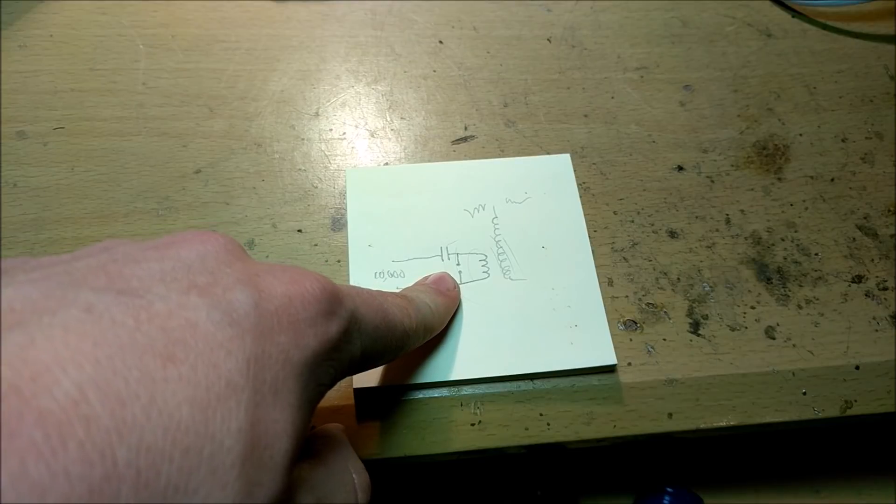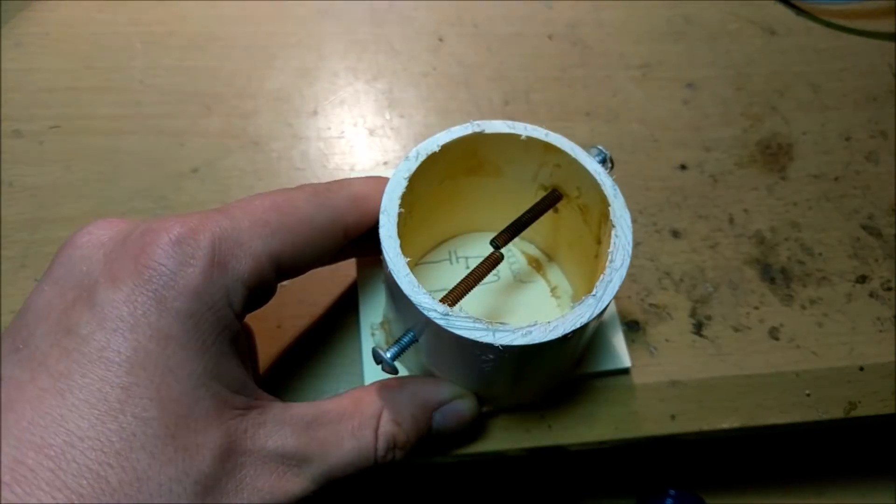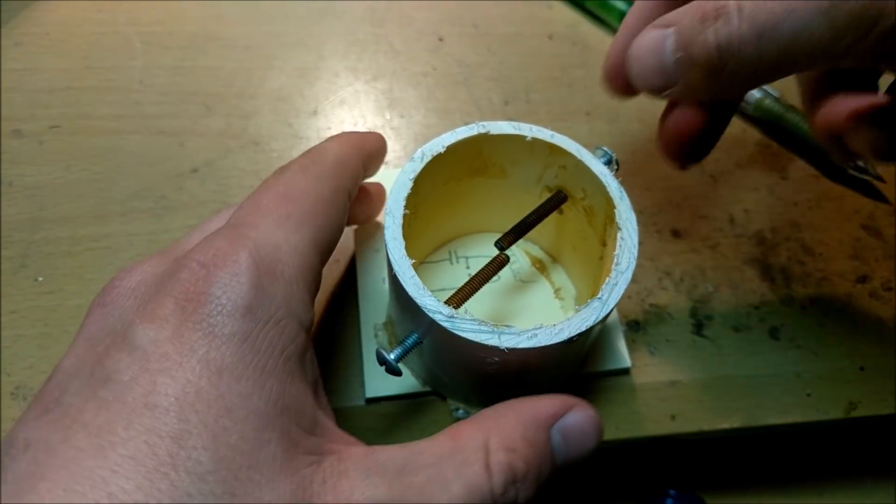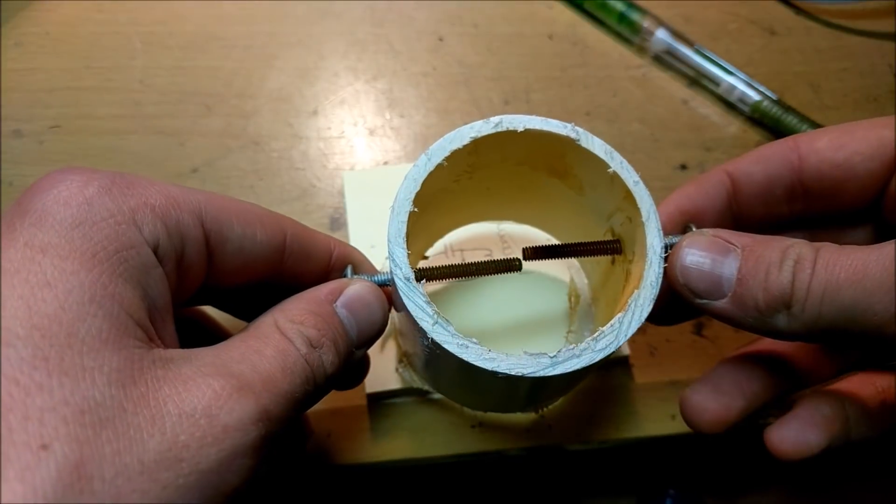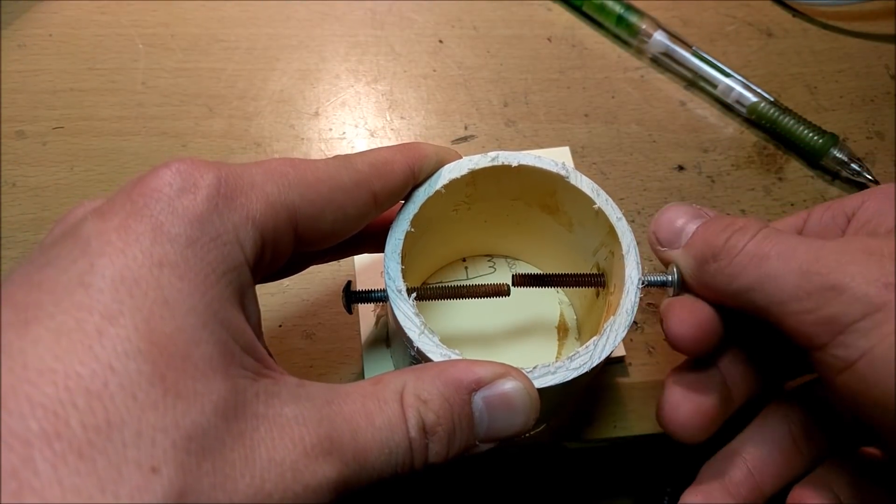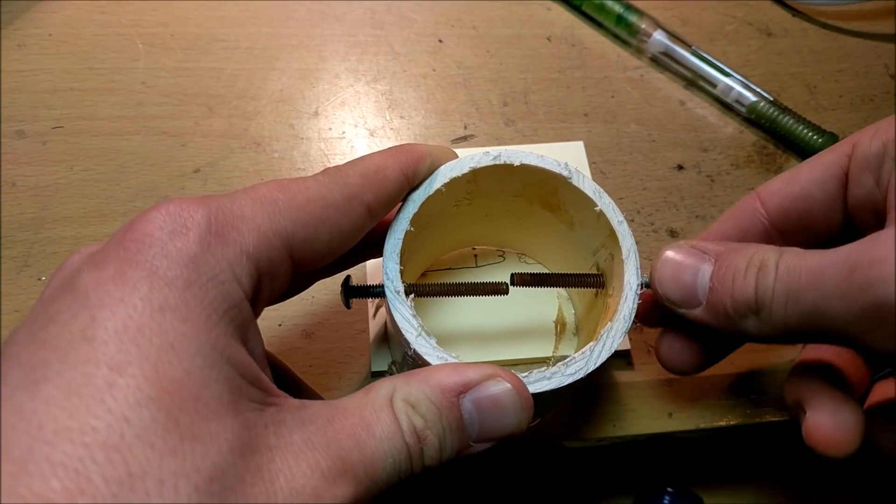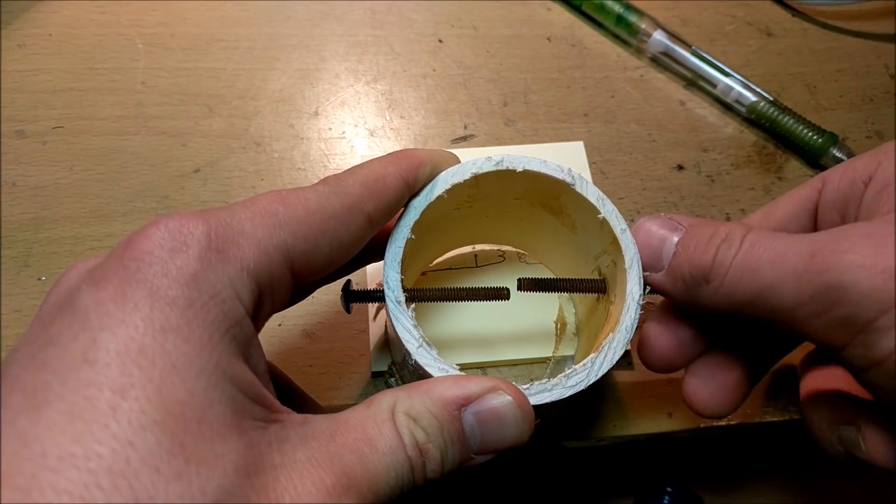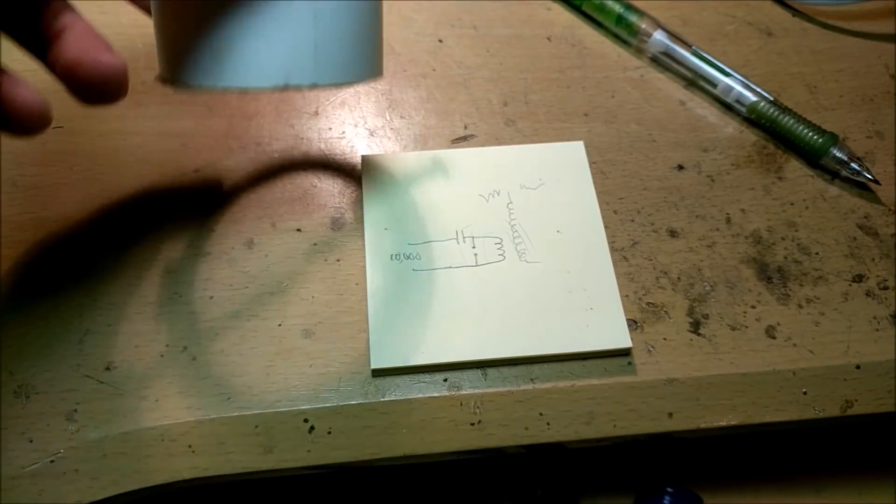So, in some circumstances, you can make a spark gap that will make a spark, depending on the length. This is the first spark gap I ever made for a Tesla coil. And as you can see, it's not pretty. It's basically a pipe with two rusty bolts going through it. And you can kind of adjust it, but not that much. And so, depending on the voltage you apply, the capacitance, and how far this little screw is turned in or out, you can determine the spark gap, or how often the spark was going.